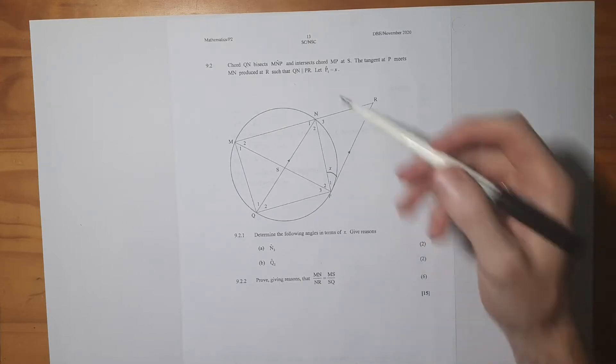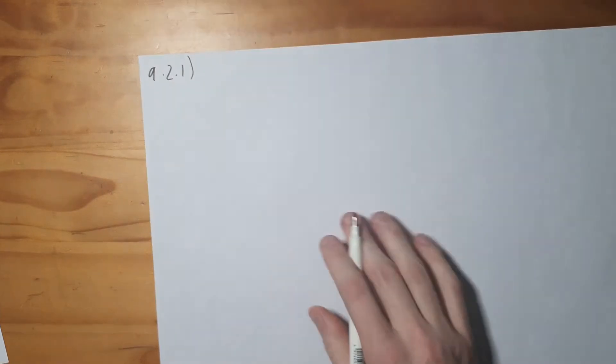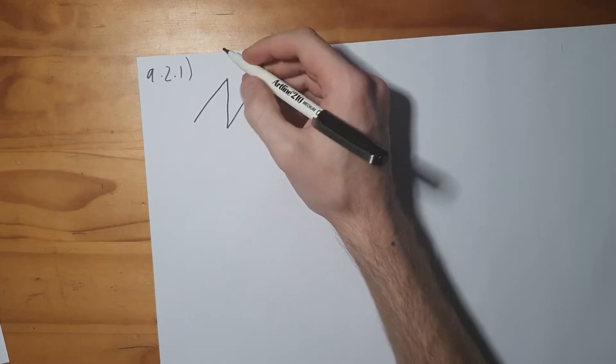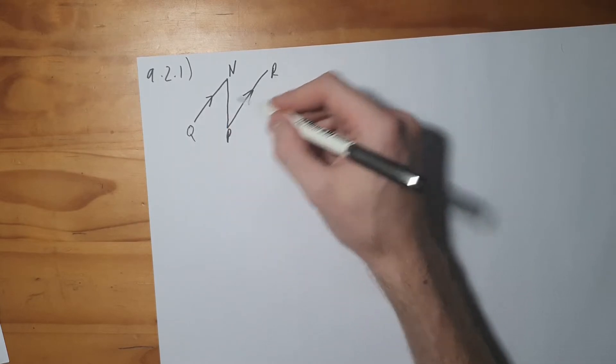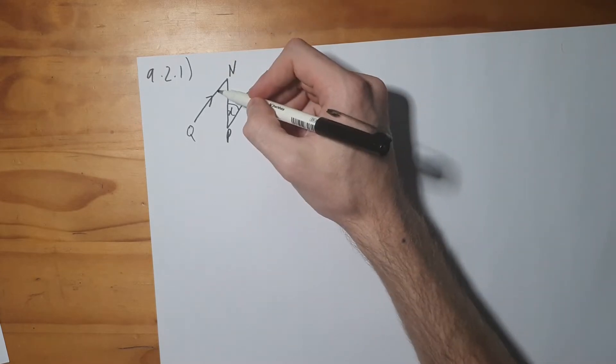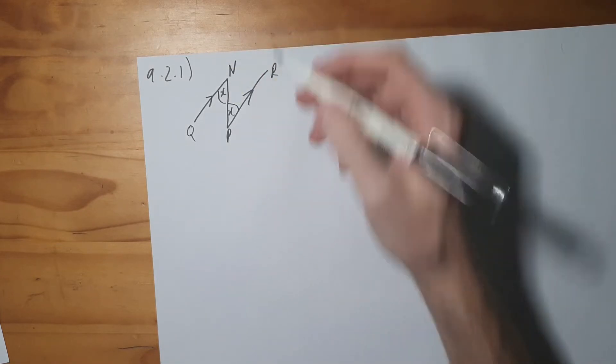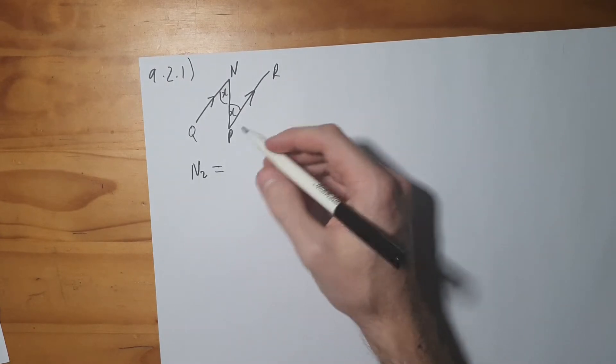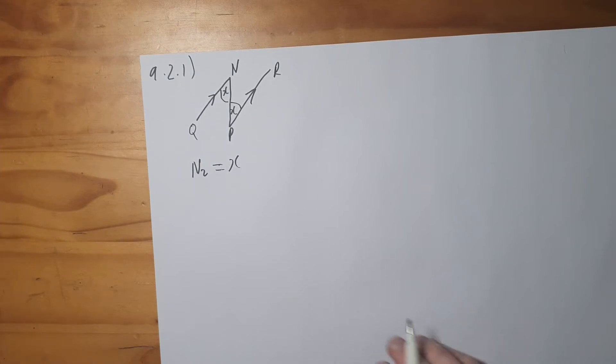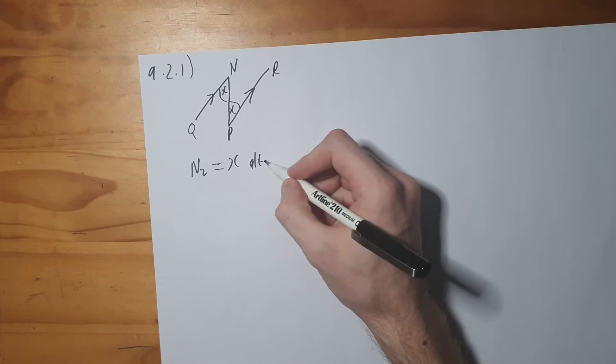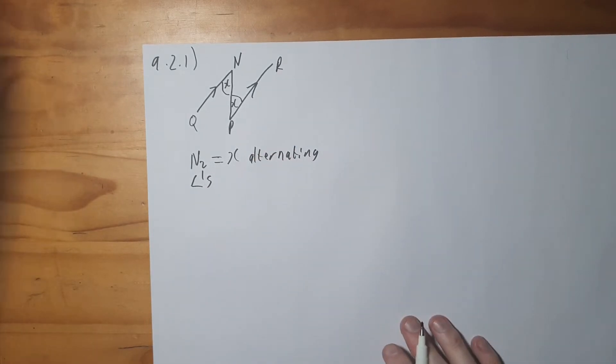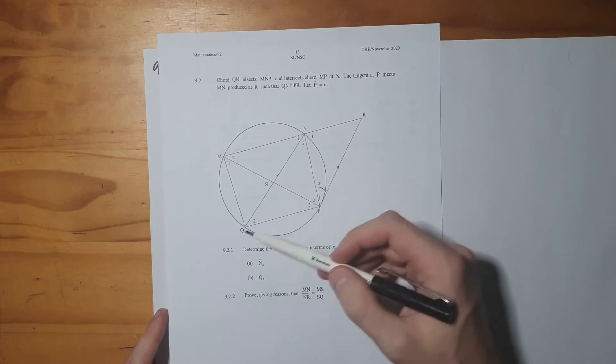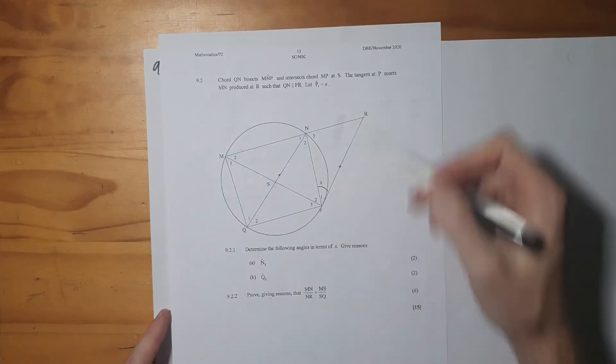Now, if we look at 9.2.1 it says determine the following angles in terms of X. So we need to find N2. So N2 is sitting up here. What we should notice is that here's N, we have a parallel line there and we have a parallel line there. This is X over here, which means this here, which is N2, is also going to be X. So we can say that N2 is going to equal to X and this is because of alternating angles.